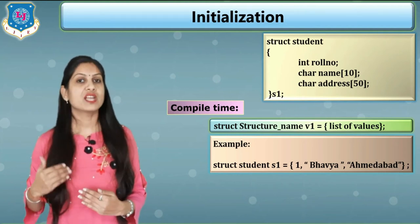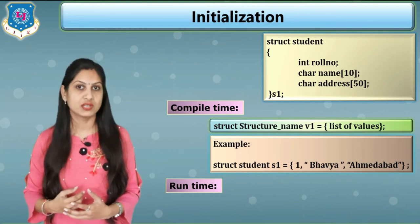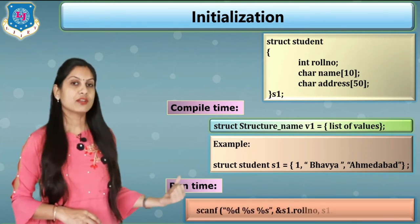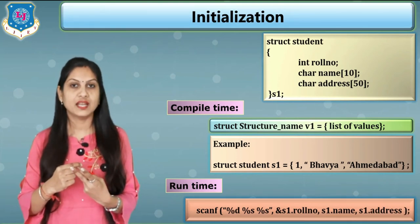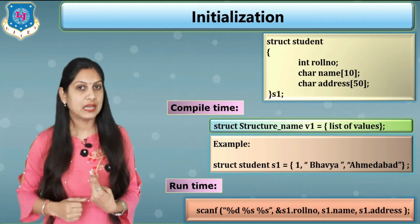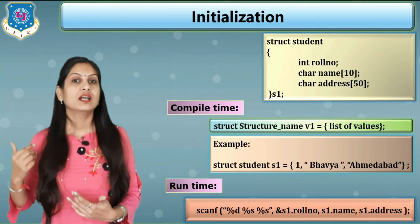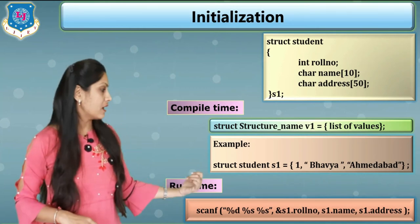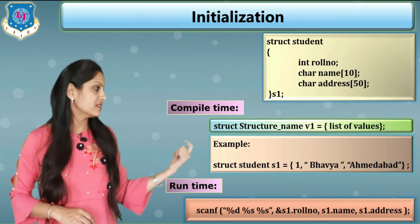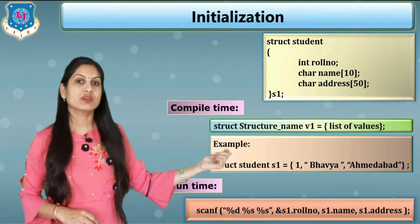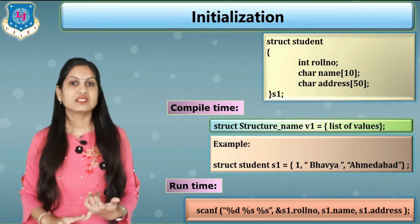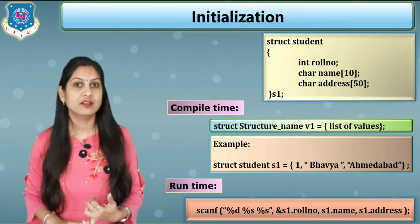When creating a real program, data should be read from the user, so we use the runtime initialization method with the scanf function. In scanf, we write three control strings: %d for role number (integer), %s for name (string), and %s for address (string). After that we use variable dot member — s1.roleno, s1.name, s1.address. Remember: when your data type is string (%s), you do not write the ampersand before the variable.